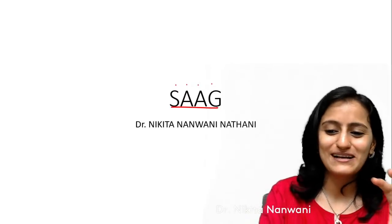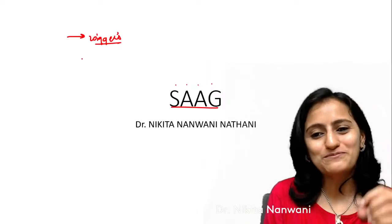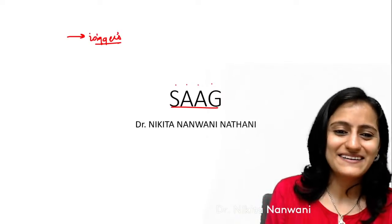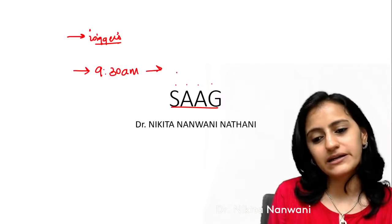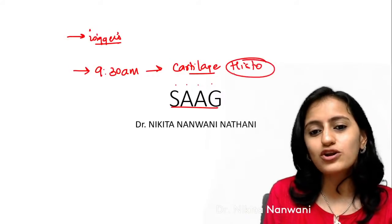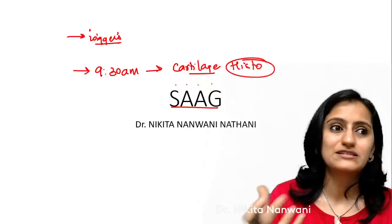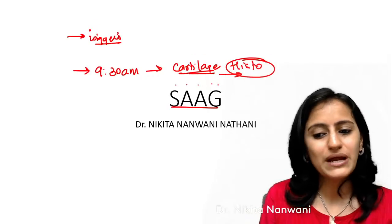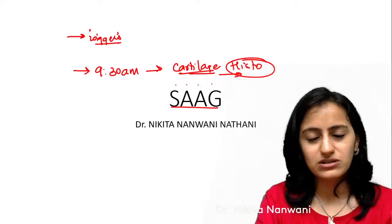Yesterday after the Wiggers diagram cardiac cycle session, thank you to everyone who messaged saying they were able to solve all the questions — that really motivates me to work more. Tomorrow at 9:30 AM in our rank booster revision series on Unacademy YouTube, the topic is types of cartilage — hyaline, elastic, fibrocartilage — a quick histology-based session.